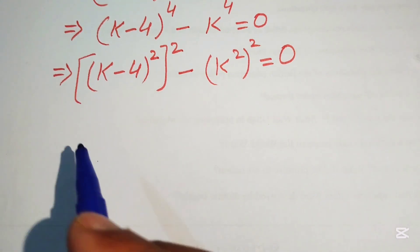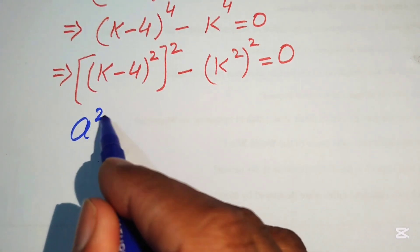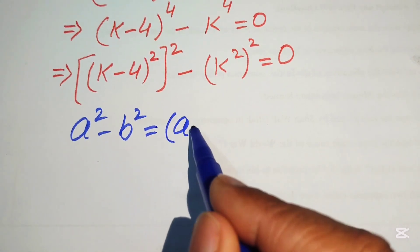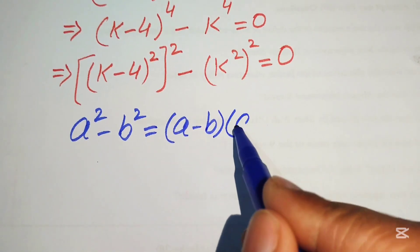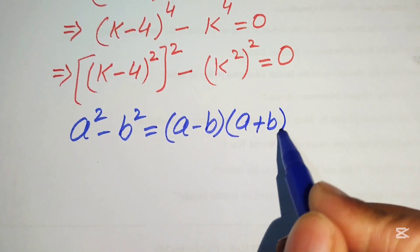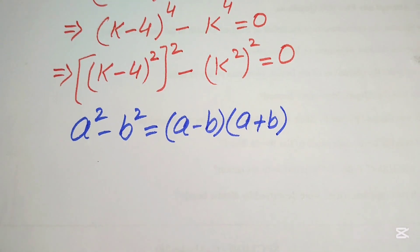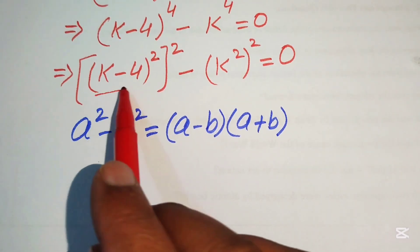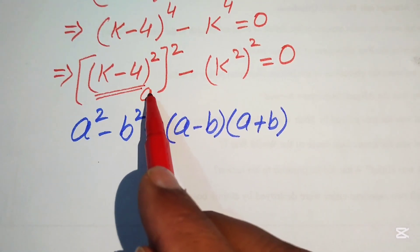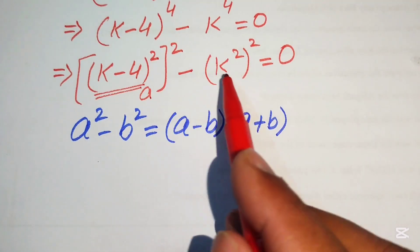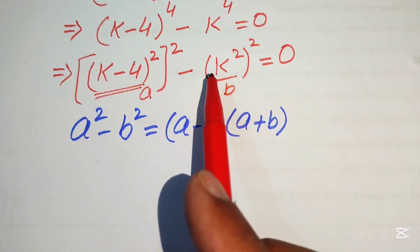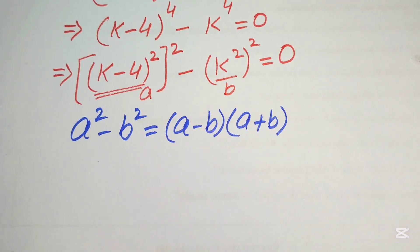We need the algebraic formula: a² − b² = (a − b)(a + b). We apply this formula where a = (k − 4)² and b = k².